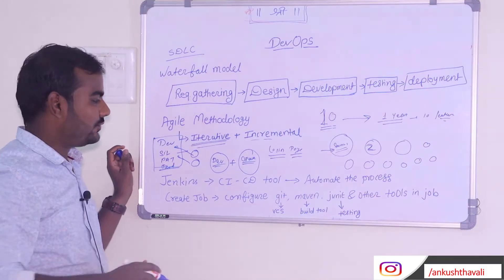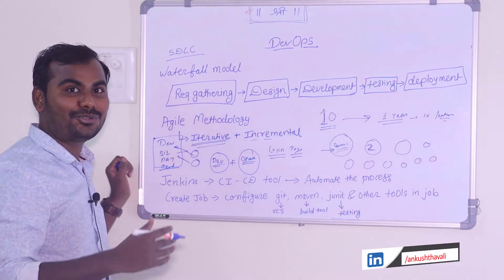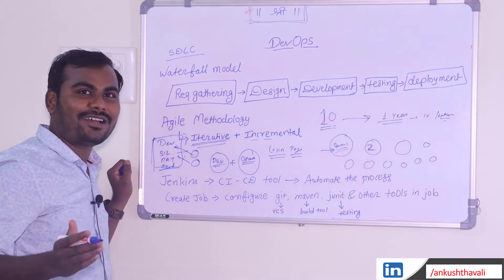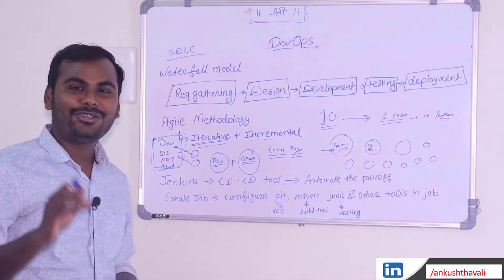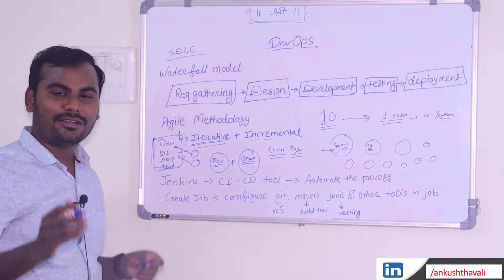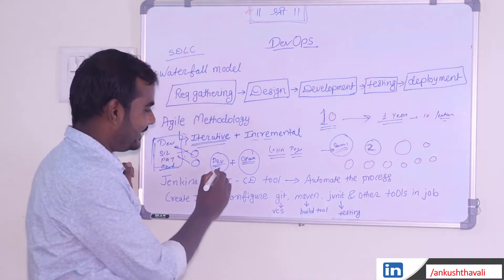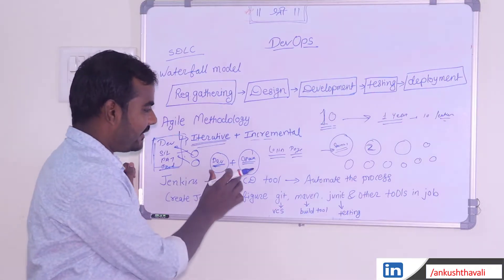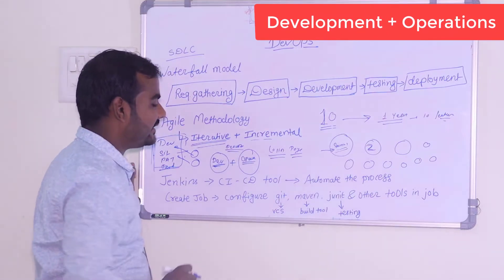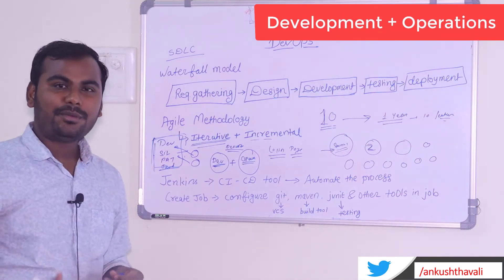In the initial days, we used to create a JAR, configure the dependencies, and then deploy the code. But sometimes a JAR would be missed, or a dependency would not get resolved, causing your production code to break. To resolve this issue, the development team and operational team were combined — we call this DevOps, a combination of Development and Operations.